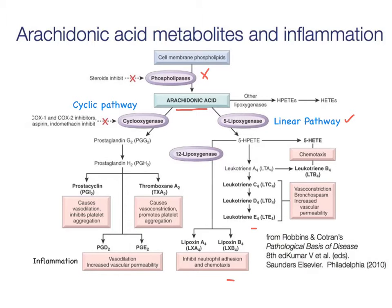Leukotrienes play a role in asthma, and so some of the anti-asthmatic drugs target these molecules. Lipoxins are anti-inflammatories but are not drug targets. The second pathway that the arachidonic acid can go through is the cyclic pathway.